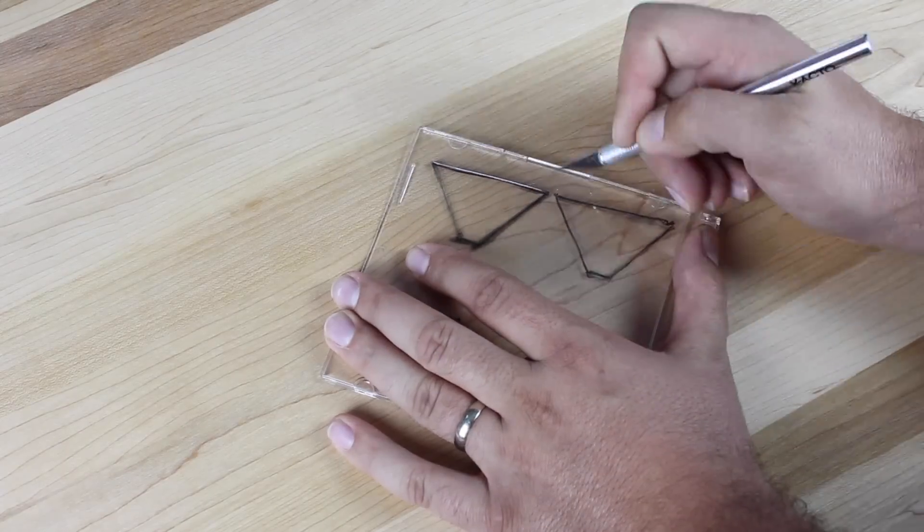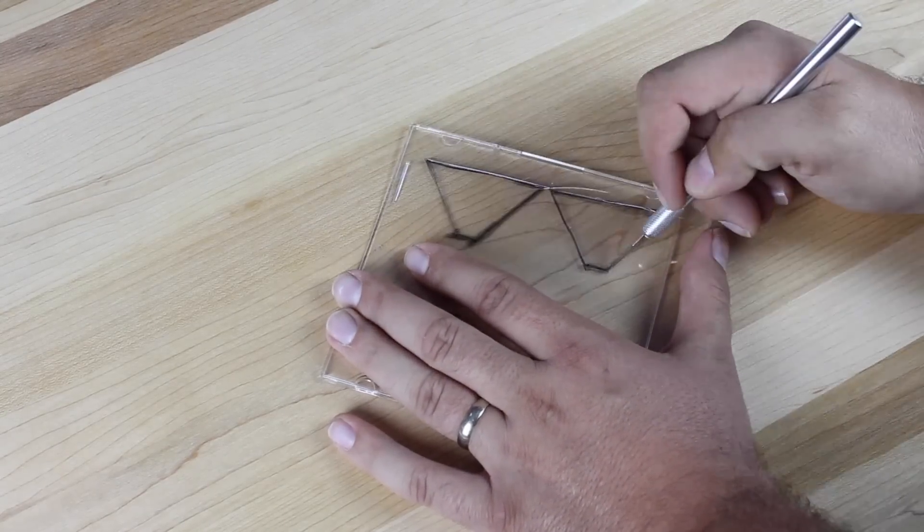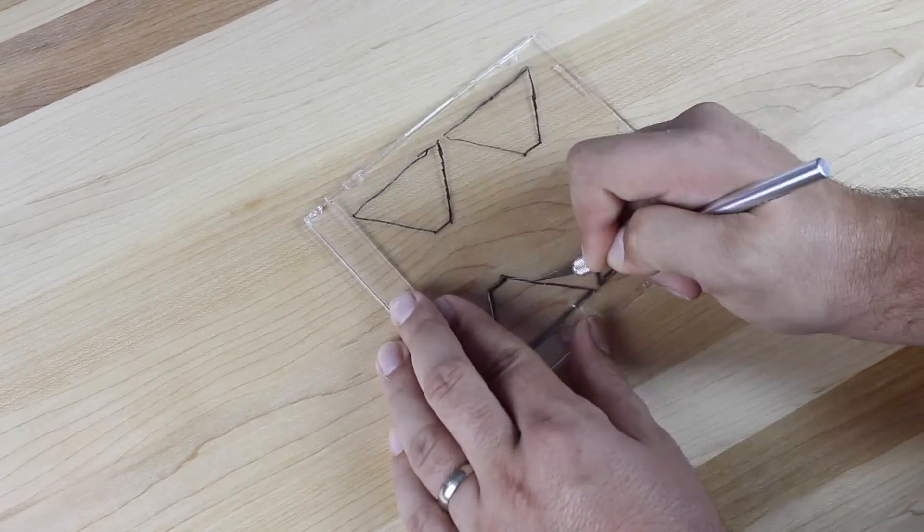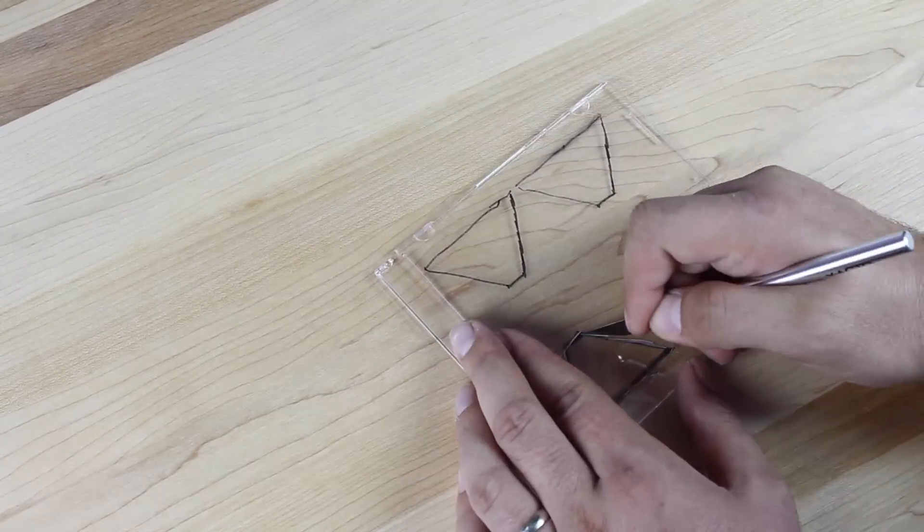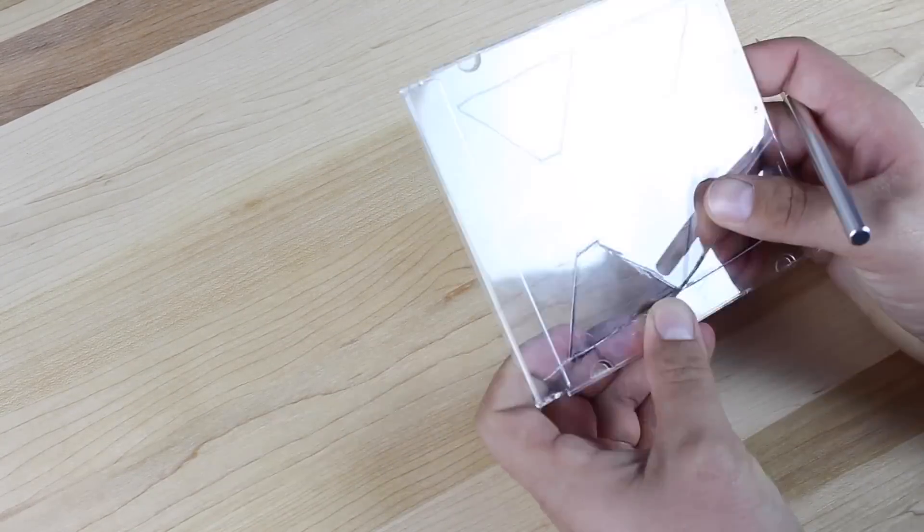Once you have the four sides traced, you're going to take an X-Acto knife or some kind of razor blade, some kind of razor cutter. Be very careful not to hurt yourself or cut into yourself. What you're going to do is very carefully cut each of the edges, and what you may want to do is flip that thing over and cut on the back side as well. Be very careful.